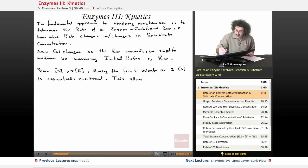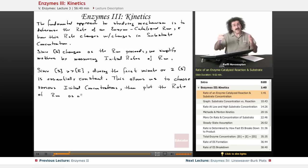So, now what this does is this allows us to choose various initial concentrations. Like I said, 10, 20, 40, 80, 160. This allows us to choose various initial concentrations, then plot the rate of reaction that we measure. The rate of reaction as a function of these different initial concentrations.